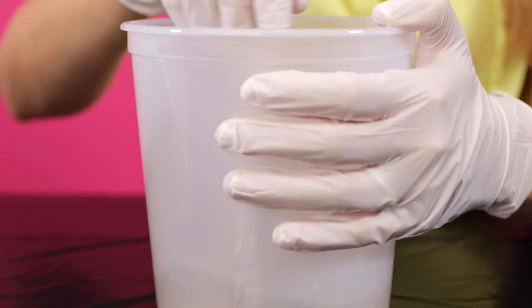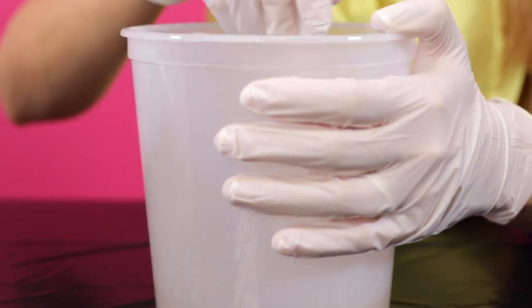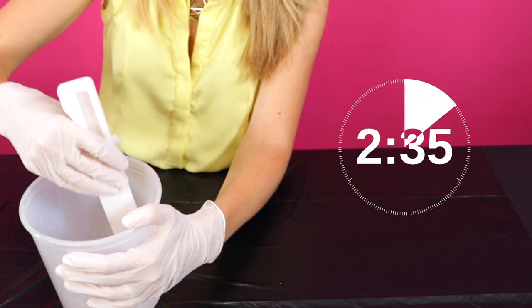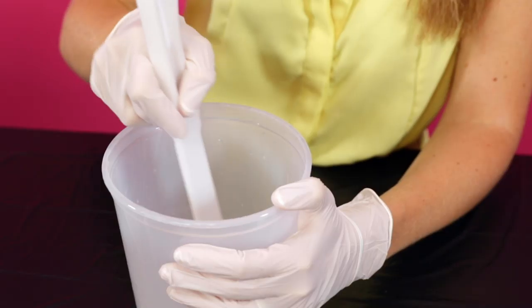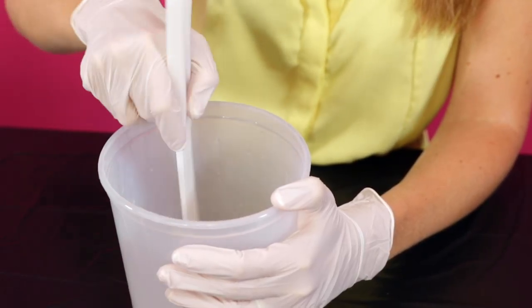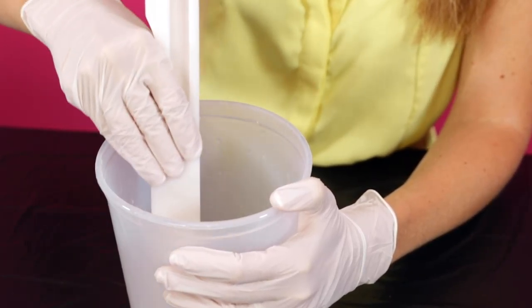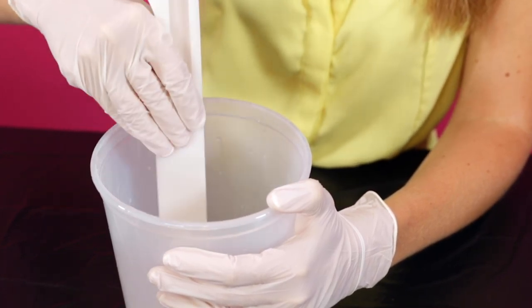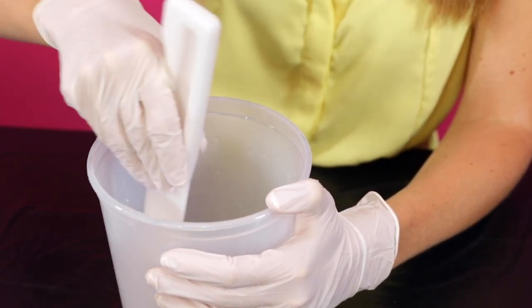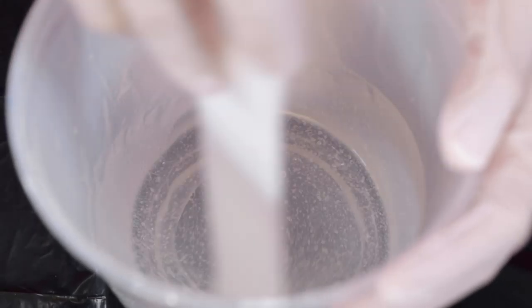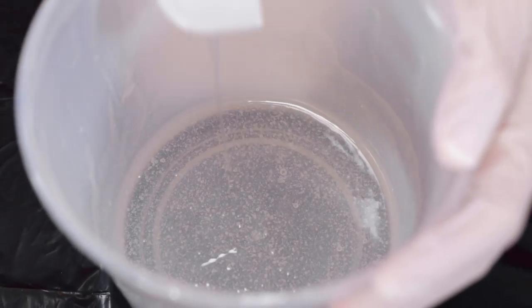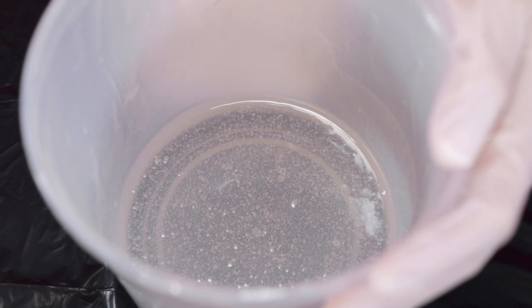Stir your resin and hardener mixture thoroughly for at least three full minutes. You'll want to scrape along the sides and bottom of the container as you stir to ensure that the entire mixture will catalyze properly and therefore cure as expected. If you see bubbles forming during this step, don't worry, we'll take care of them in step five.